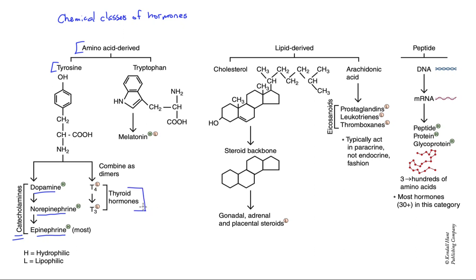Tyrosine is also utilized as a precursor to the thyroid hormones. Thyroid hormones are actually derived from a larger protein, where the tyrosines are combined in pairs, known as dimers. Then they become iodinated — iodine atoms are added. You can either add one or two per tyrosine, and they're in dimers, so we can end up with tetraiodothyronine or triiodothyronine based upon the number — tri for three, tetra for four. Note that T3 is the active hormone, even though T4 is found in larger quantity within the bloodstream, indicating that T4 is the reserve and has to be converted to T3 for its actions.